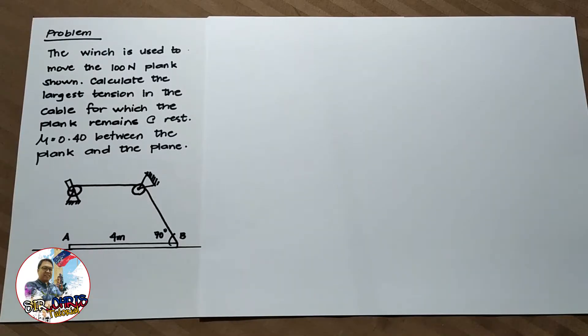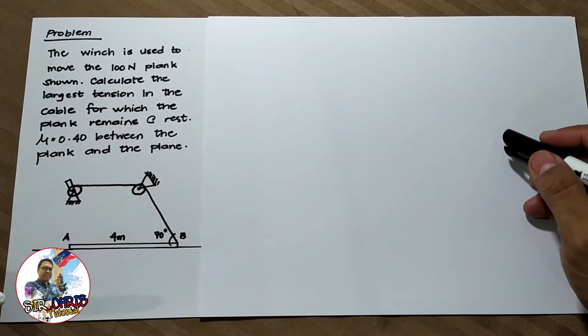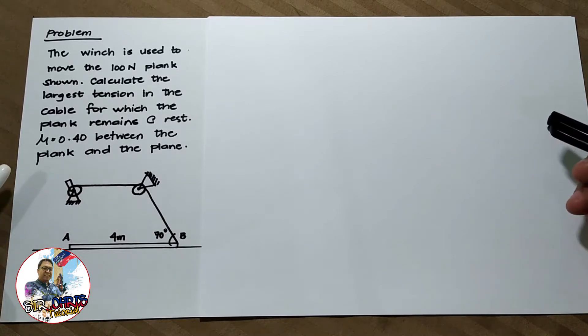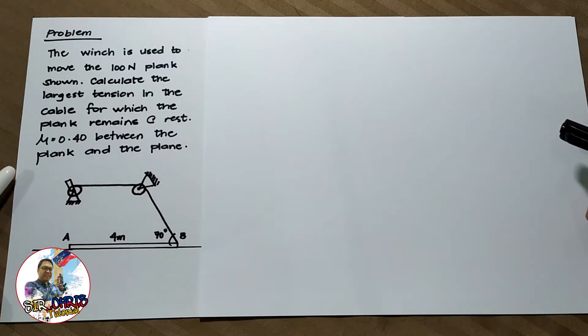We have here a case of impending tipping. The problem: a winch is used to move the 100N plank shown. Calculate the largest tension in the cable for which the plank remains at rest. Mu is equal to 0.4 between the plank and the plane.